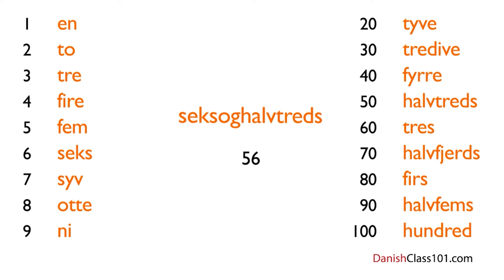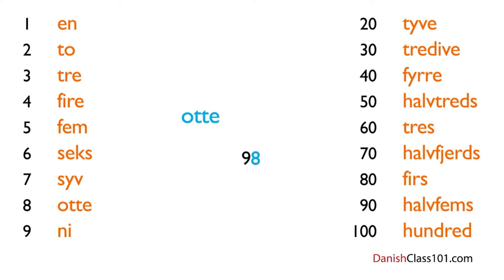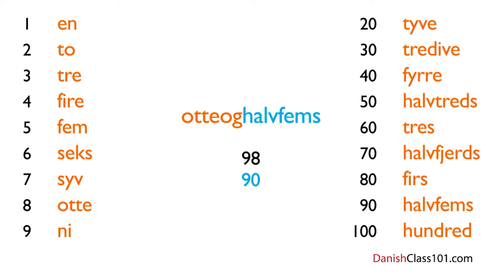Let's make another number — for instance 98. Take 8, add og, and then add 90 — halvfems. So: otte og halvfems. Now it's time for Louise's insights.